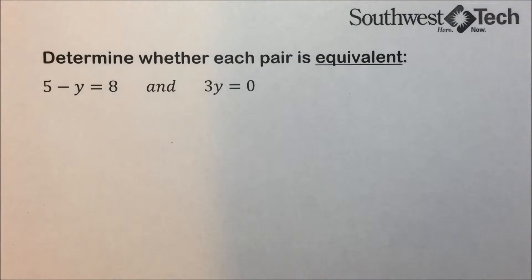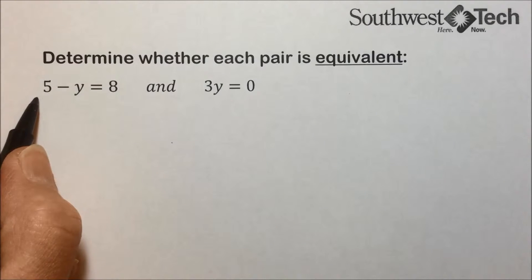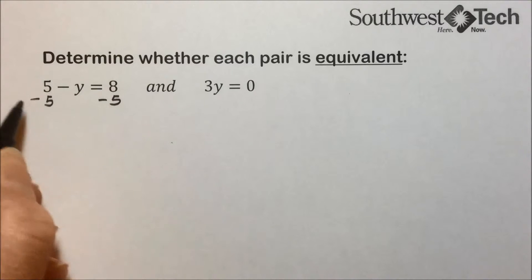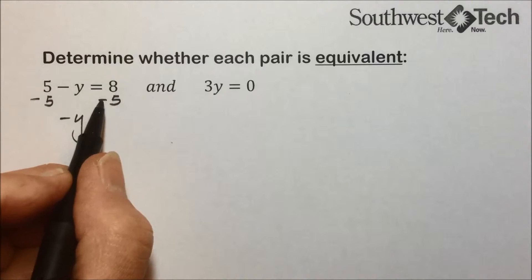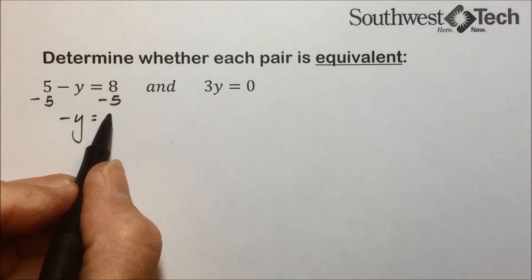To do that, we are going to have to solve for the variable. So to begin with, to get y by itself, we'll undo or eliminate the 5 by subtracting 5 from each side, leaving negative y equals 8 minus 5, which is 3.